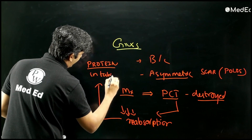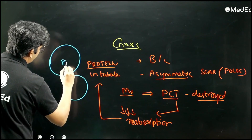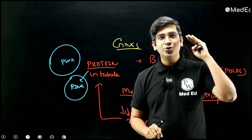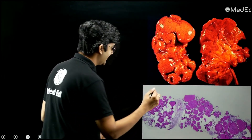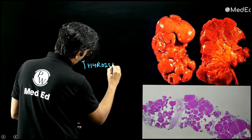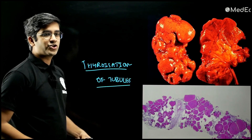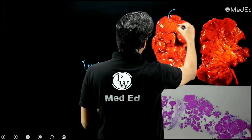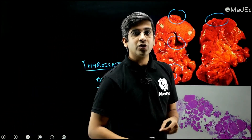Due to failed reabsorption in damaged proximal convoluted tubules, proteins deposit inside the tubules and can form concretions over time. Looking at the kidney biopsy image, the entire tubule appears dilated and filled with pink protein — resembling a thyroid follicle. This classic finding is called thyroidization of tubules. The gross image from Robbins shows bilateral asymmetric scars, which is diagnostic of chronic pyelonephritis.